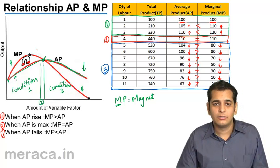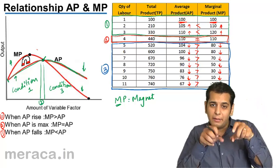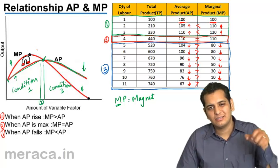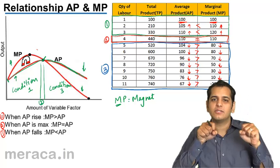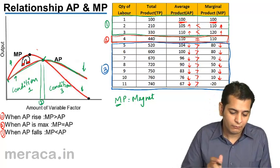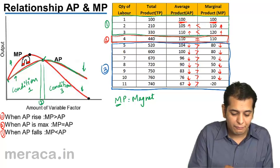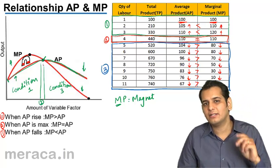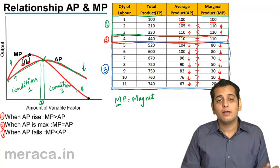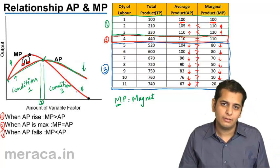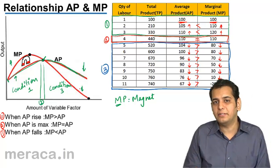So when MP is rising, AP also rises. But it is below MP. And thus, MP is able to attract us. But what happens after this point, after the second condition is met, AP becomes higher than MP. MP goes below AP. Now again, consider it to be a magnet.